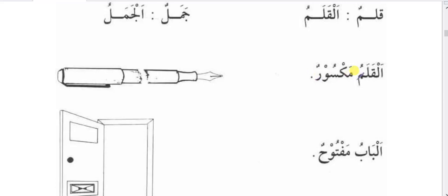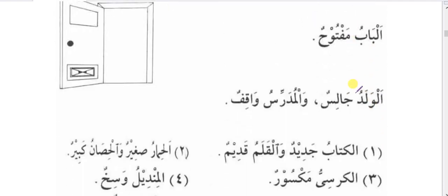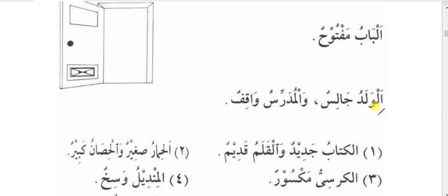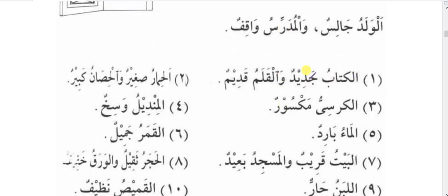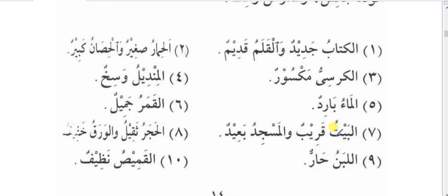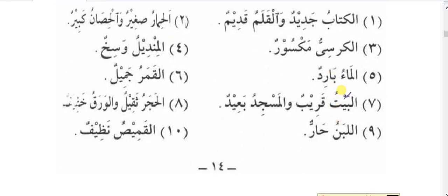More examples of muptada-khabar sentences: al-babu maftuhun — the door is open; al-waladu jalisun — the boy is sitting; wal-mudarrisu waqifun — and the teacher is standing; al-kitabu jadeedun — the book is new; wal-qalamu qadeemun — and the pen is old; al-himaru saghirun — the donkey is small; wal-hisanu kabirun — and the horse is big; al-kursiyyu maksoorun — the chair is broken; al-mindilu wasakhun — the handkerchief is dirty; al-maa'u baridun — the water is cold.